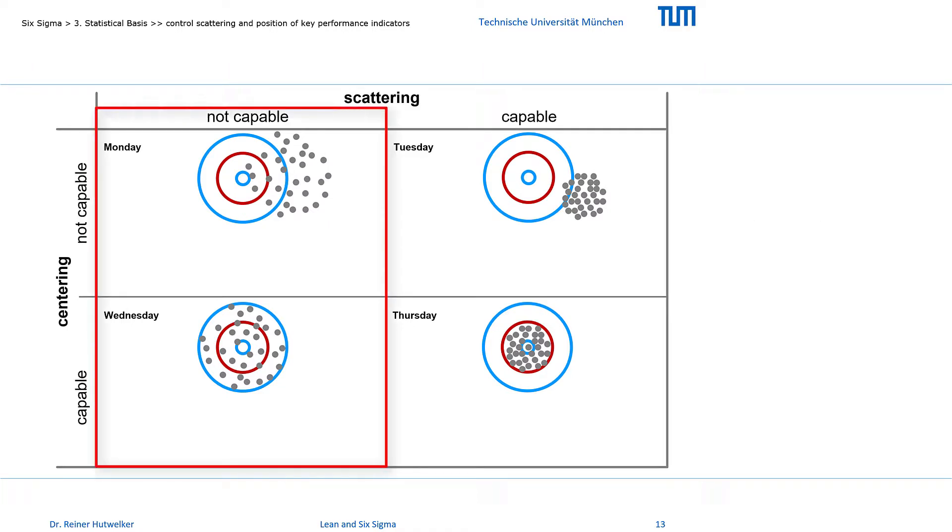The results in columns, on Monday and Wednesday, differ from the results on Tuesday and Thursday, in the degree of their scattering. And the results in rows, on Monday and Tuesday, differ from the results on Wednesday and Thursday, in the degree of their position centering.